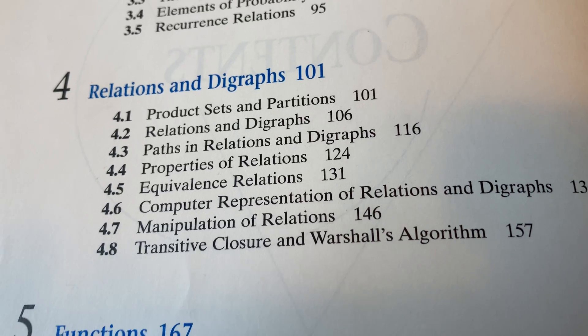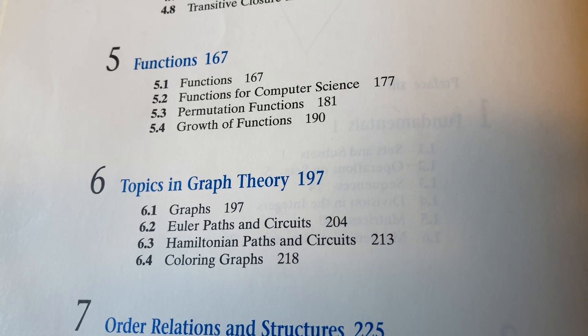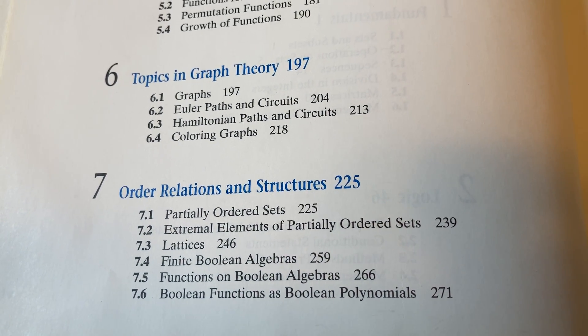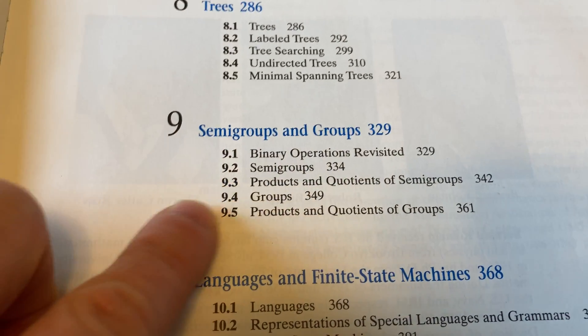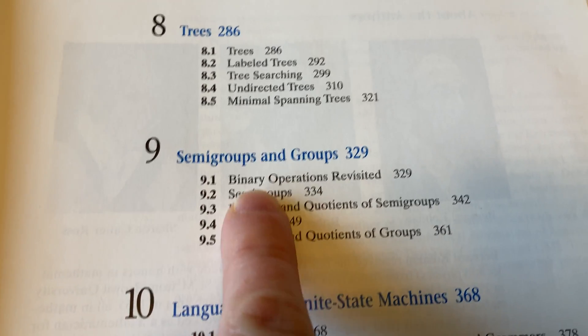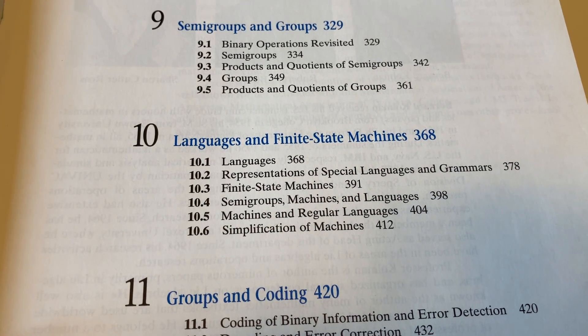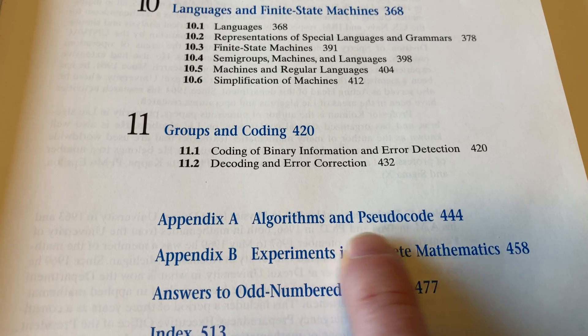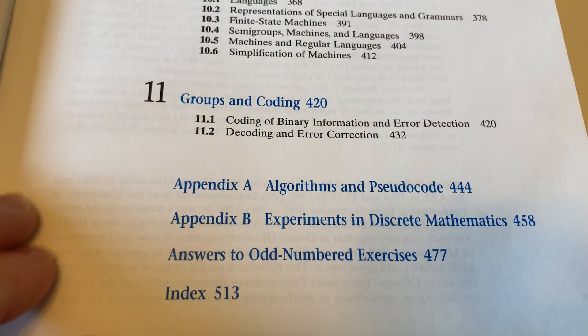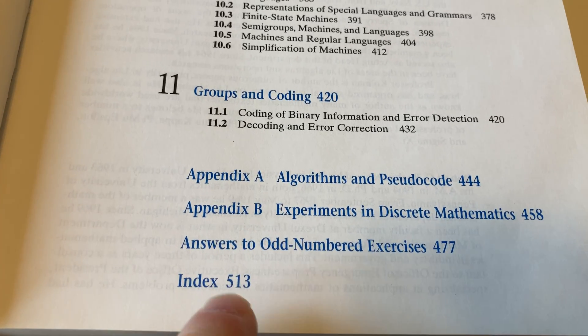Four is on relations and digraphs. Five is on functions. Sixth is on topics and graph theory. Seventh is on order relations and structures. And I've looked at some of these chapters, but not all of them. For example, I have not looked at chapter 8, which is on trees. I have read pretty much all of 9. It's on semi-groups and groups. And I think they did a really good job here. It's really, really written in a very introductory way. 10 is on languages and finite state machines. I have not looked at that. And 11 is on groups and coding. And then here you have some algorithms and pseudocode. Experiments in discrete math. I have not looked at that. And answers to odd-numbered exercises. This is so useful. And then there's an index, which is also pretty good, on page 513.